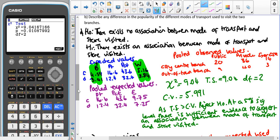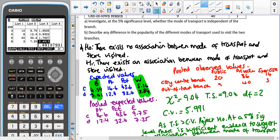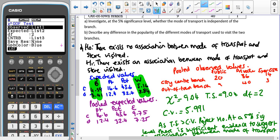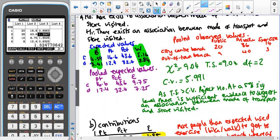Now for part B this is going back to something from the first chi squared hypothesis testing video so describe any difference between the popularity of the different modes of transport used to visit the branch so remember in your calculator you type your observed values but this time it's your pooled observed values that you type into list 1 so the red one's here and then you pooled expected values into list 2 then we're going to test chi and then goodness of fit instead double check it says list 1, list 2 and then our degrees of freedom from part A was 2.